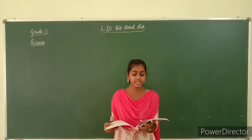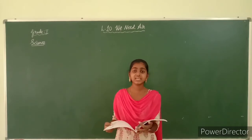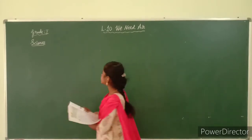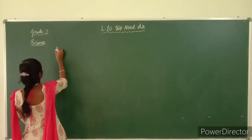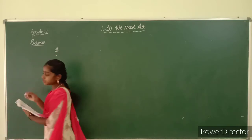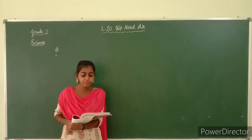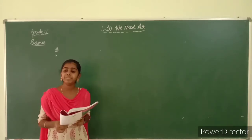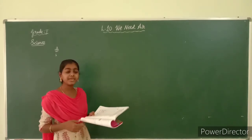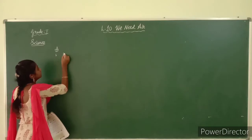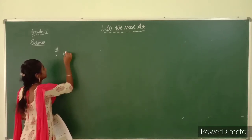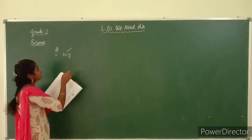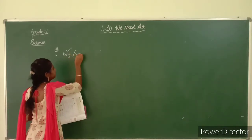Look at exercise A. Take the correct answers. First one: when we blow air into a balloon, the balloon becomes big or small? Big. Tick at the spelling 'big'. It is already given. At the spelling 'big', a tick mark is already given for you.